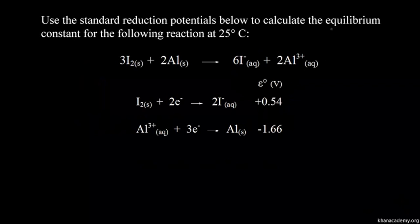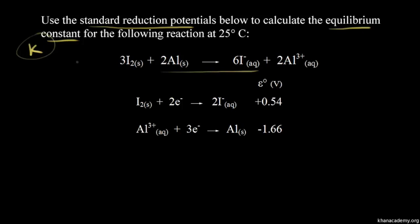Our goal is to calculate the equilibrium constant K for this reaction. We're going to use the standard reduction potentials to do so. In the previous video, we talked about the relationship between the equilibrium constant K and the standard cell potential E°. So if we can find E° for this reaction, we can calculate the equilibrium constant K. We've seen how to find E° of the standard cell potential in earlier videos.